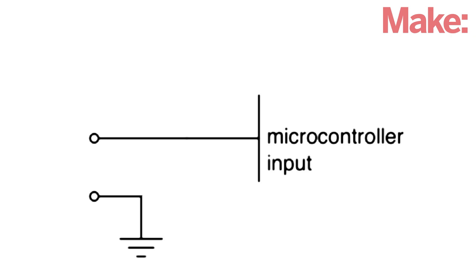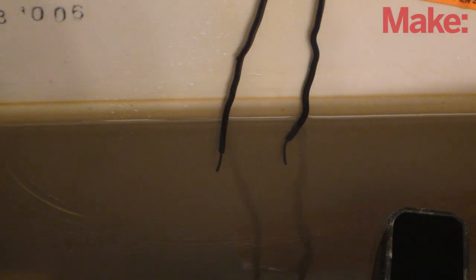Connect one wire to ground and connect the other wire to an input pin. Then also connect the input pin to 5 volts with a high value resistor. When the wires are submerged, the input pin will read a low value. But when the toilet is flushed and the water level drops, the electrodes will no longer be in contact, and the input pin will register a high value.